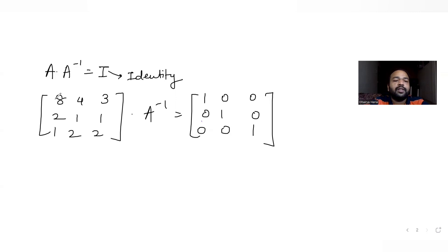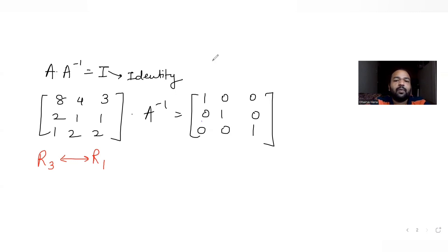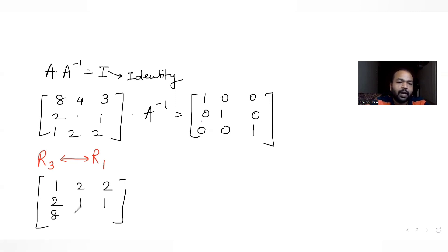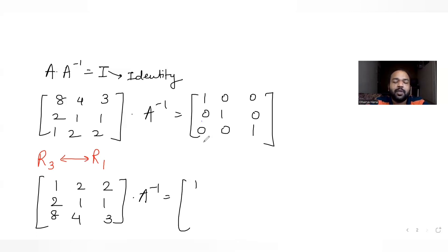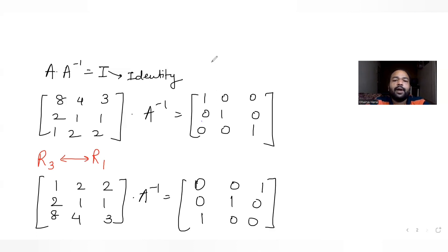First, I want to make the top-left element 1. I can do this by swapping R3 and R1. After swapping, matrix A becomes [1,2,2; 2,1,1; 8,4,3]. On the identity matrix side, R3 becomes [0,0,1] and R1 becomes [1,0,0], reflecting the row swap.